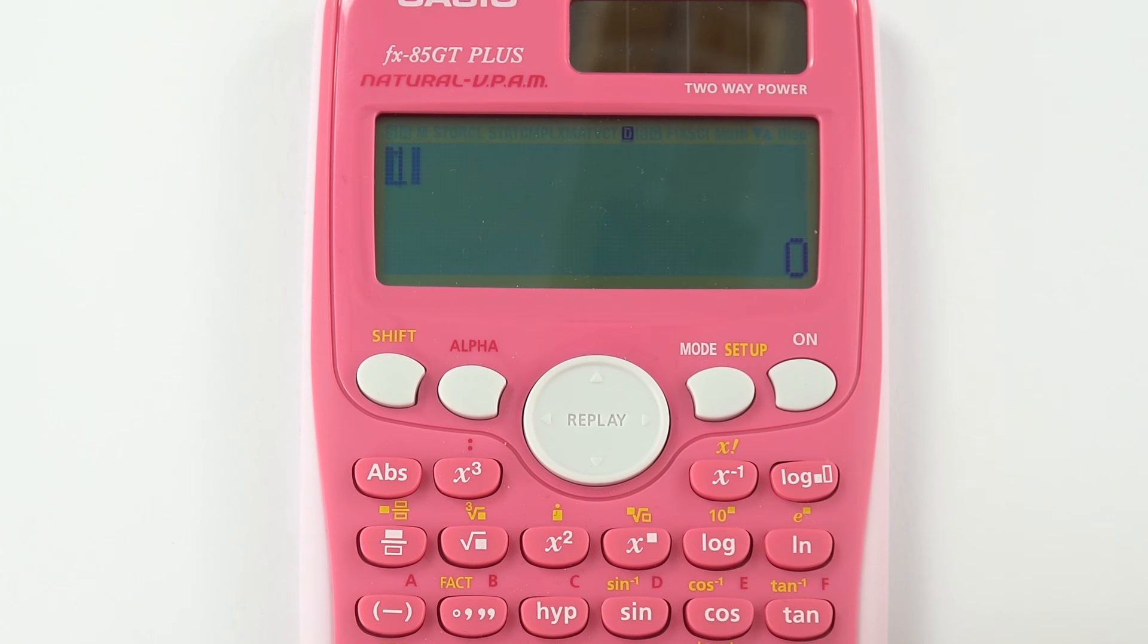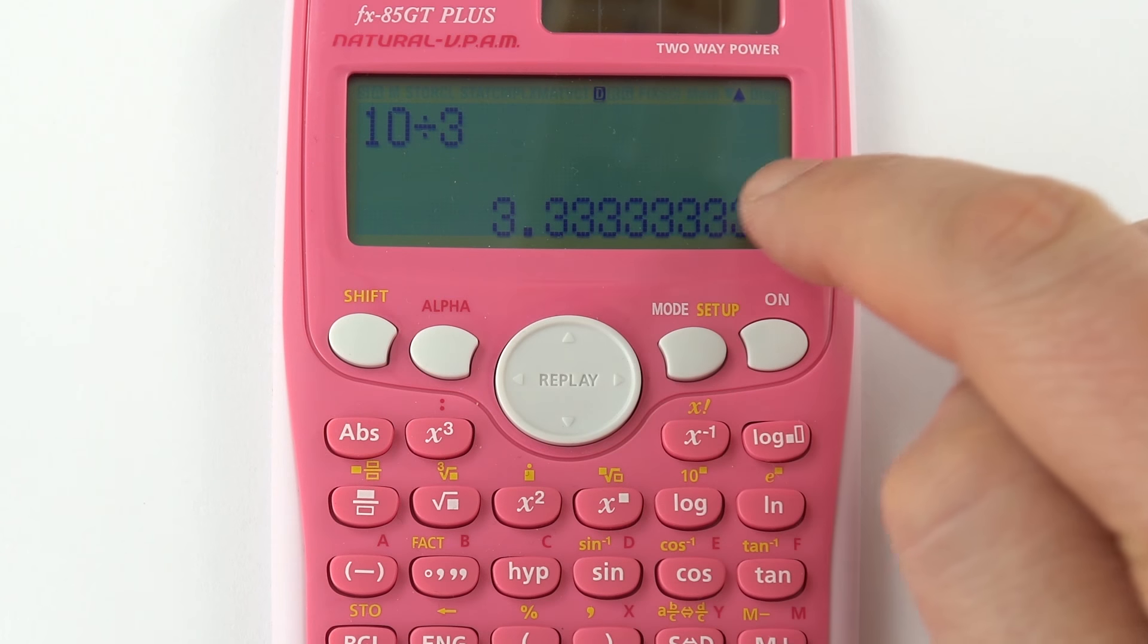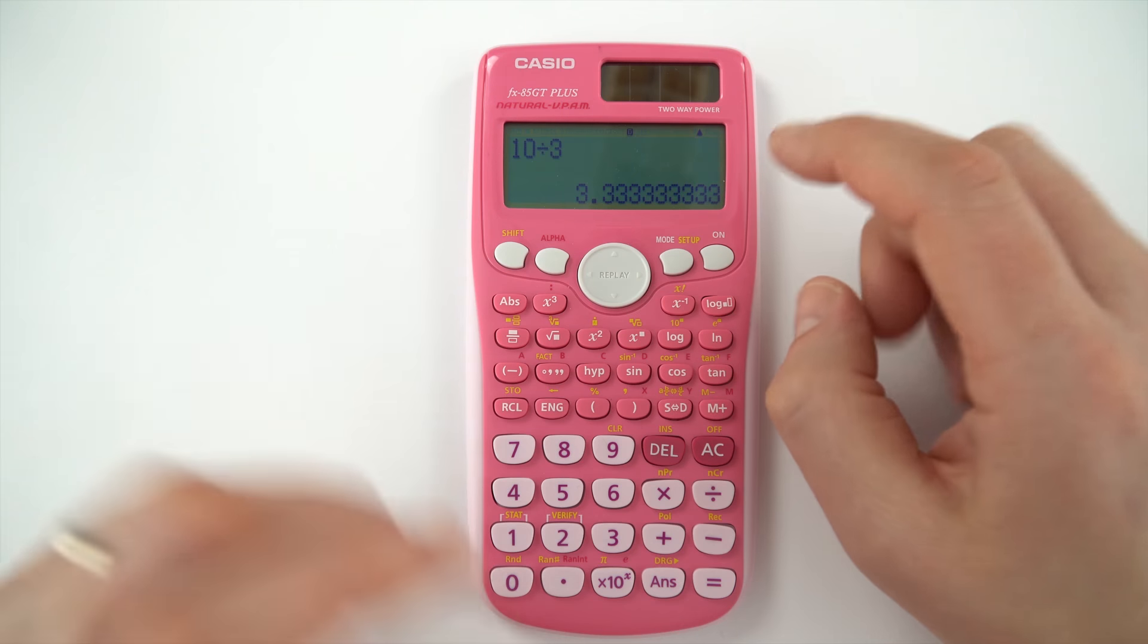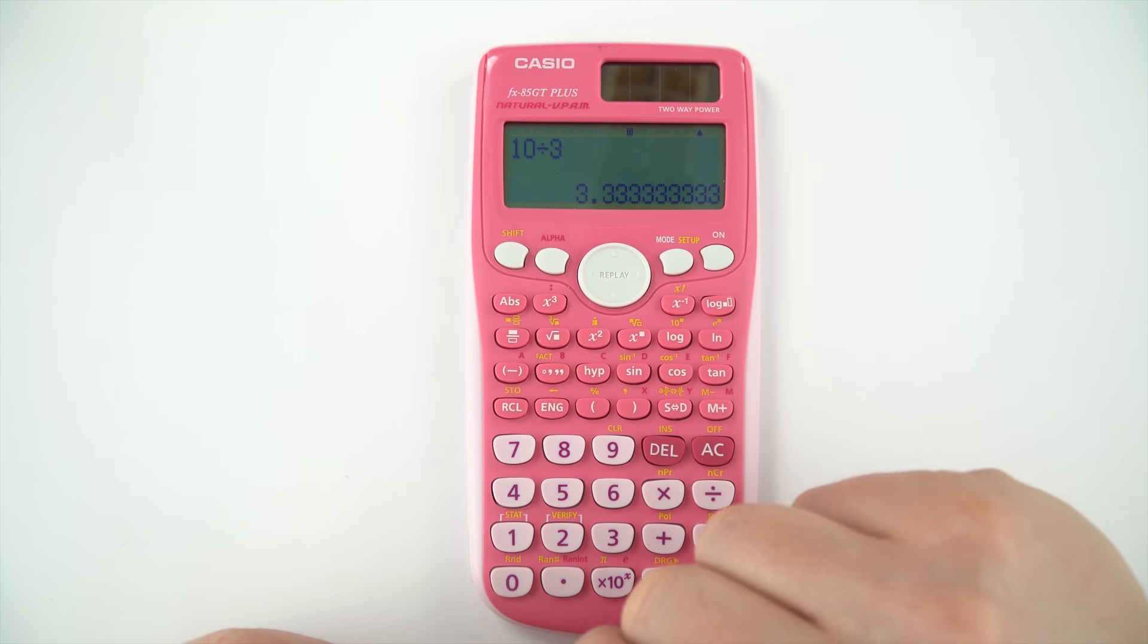And if I then put the equation in again, so 10 divided by 3, it now gives an answer of 3.333333. This is the way that you should set up your calculator. So when it comes to doing calculations, you can always write your answer to the appropriate number of significant figures.